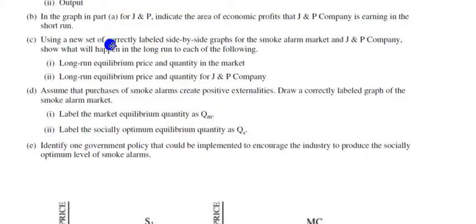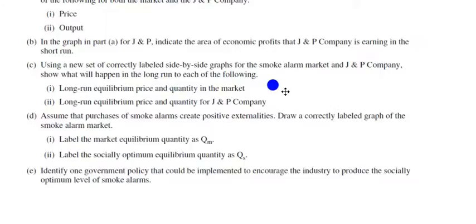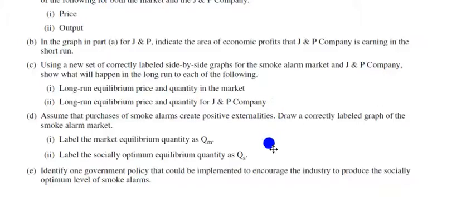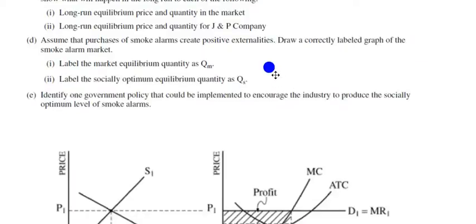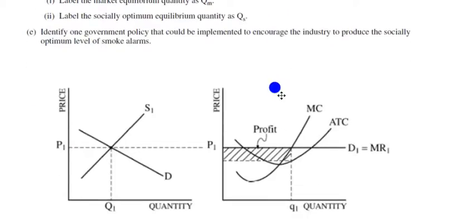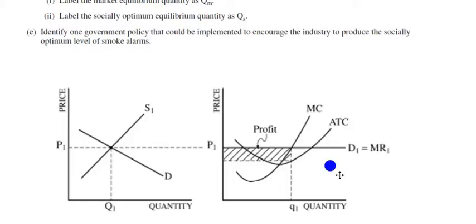Now for part C, we draw a new set of side-by-side graphs for the same market and firm, showing what happens in the long run and the long-run equilibrium price and quantity for J&P company. We know that in the long run a firm earns zero economic profit, or normal profit. That means average total cost is going to equal price — but what changes? Does ATC change, or does price change?